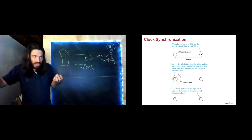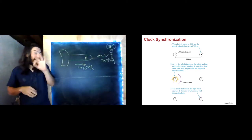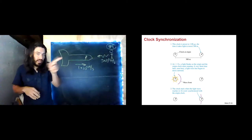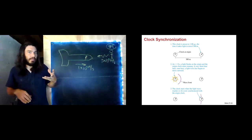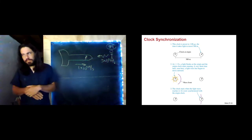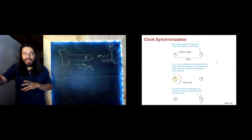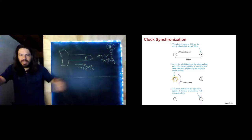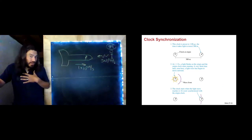It takes eight and a half minutes for light to reach us from the sun, so I'm not seeing the sun as it is right now — I'm seeing it as it was eight and a half minutes ago. If I could see a clock on the sun, I would be seeing a clock running eight and a half minutes slow.